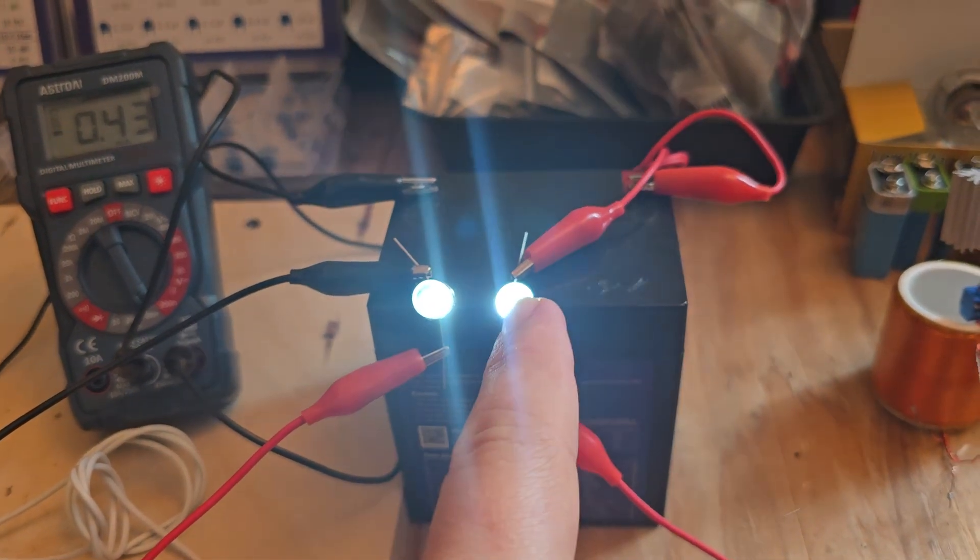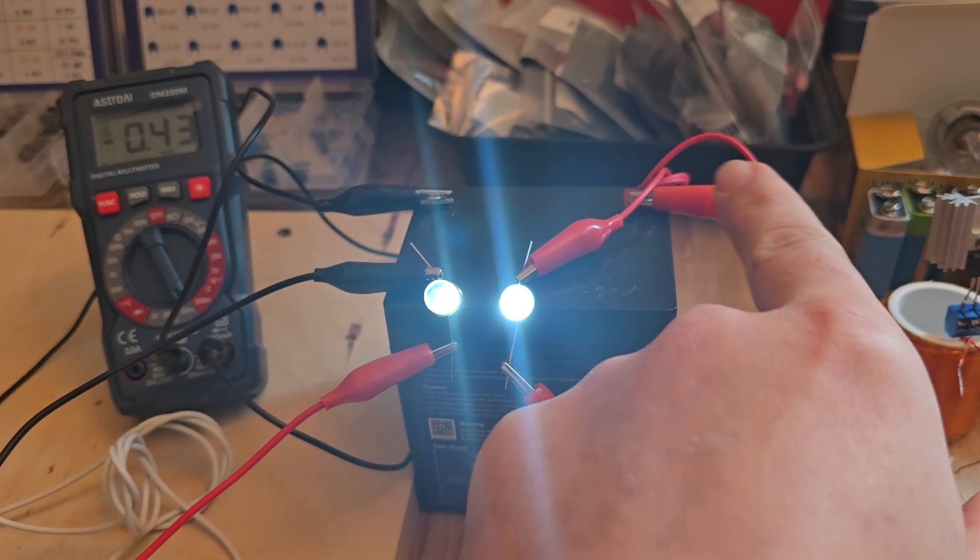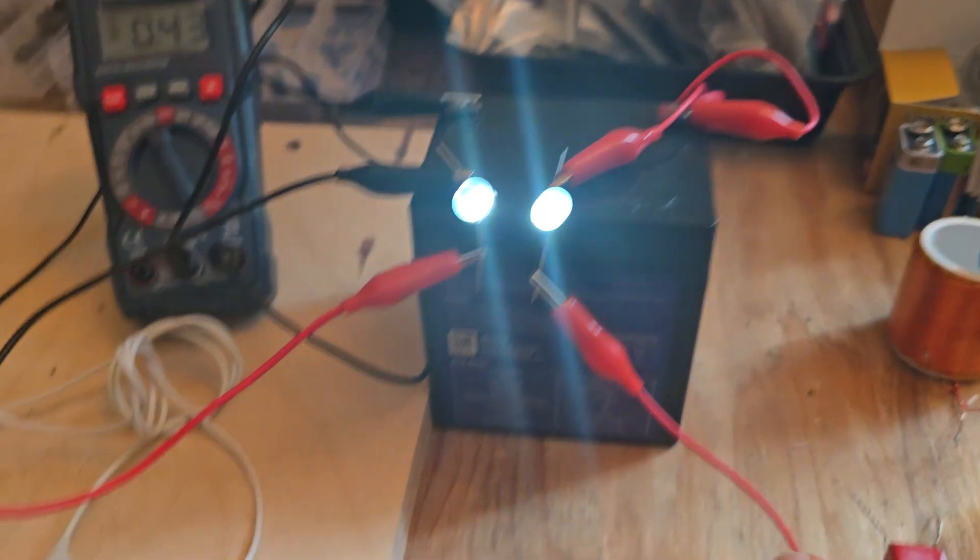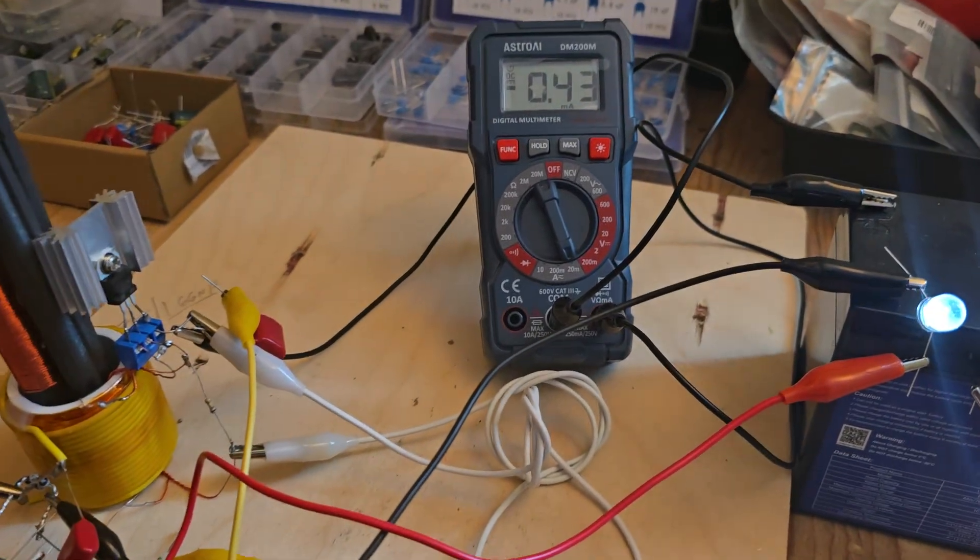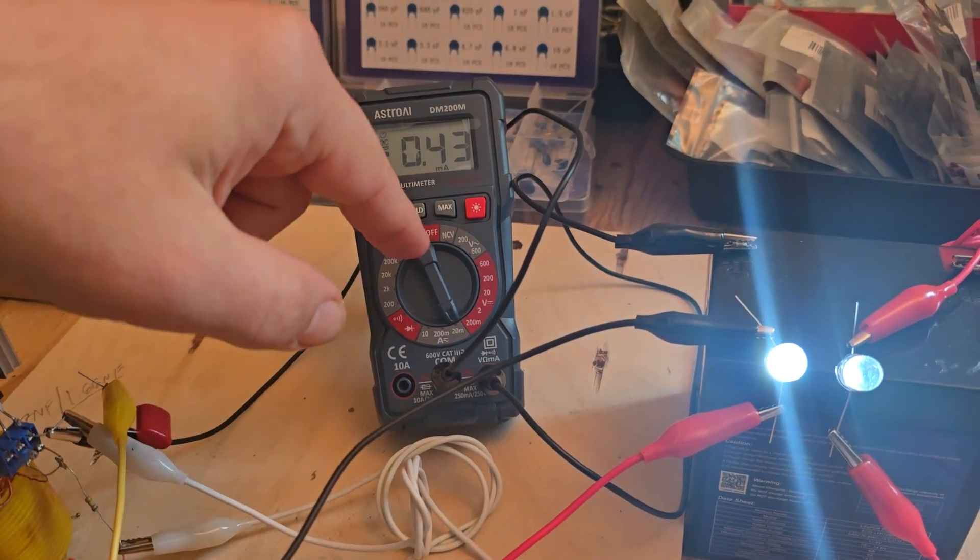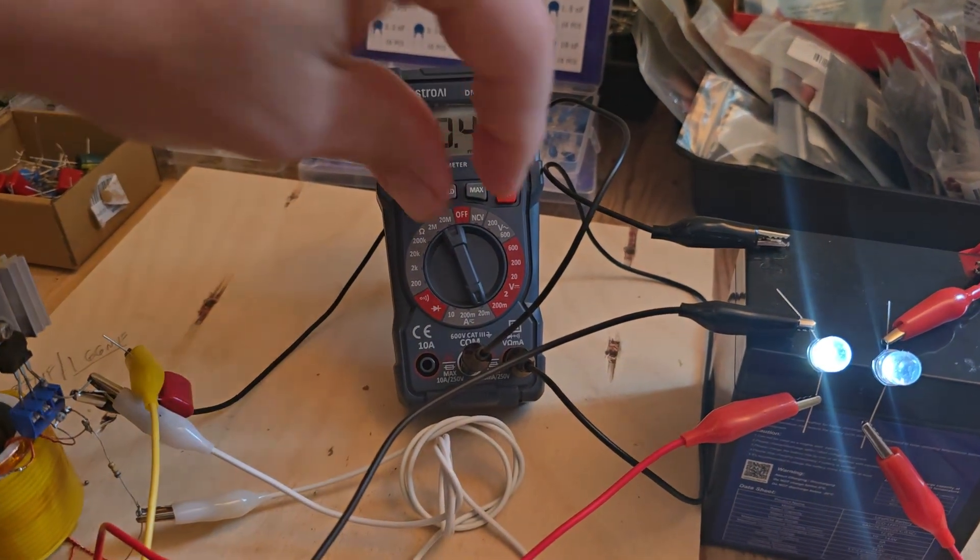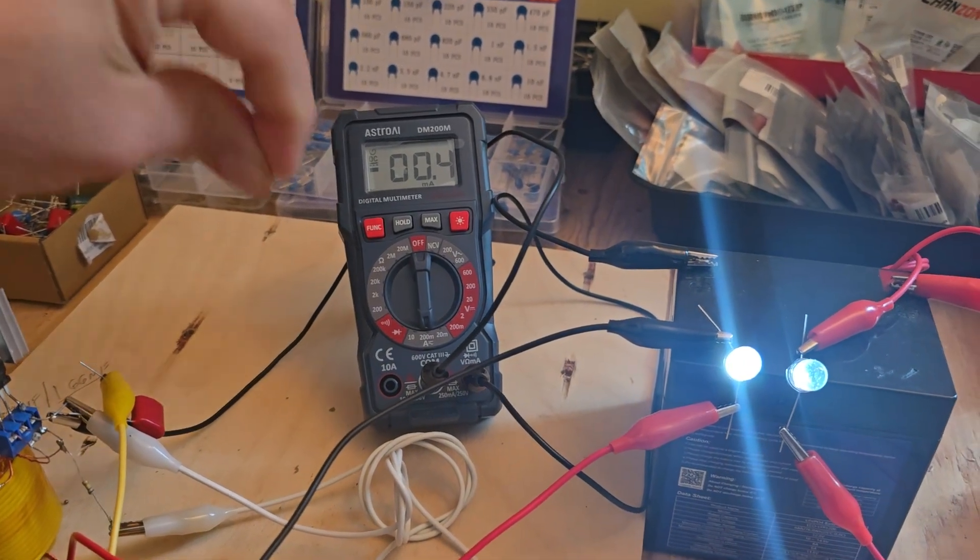This is the LED in series feeding the system. It goes 12 volt battery, LED, transmitter input. And then on the negative output of the transmitter, the negative rail is our series digital multimeter. And we're consuming half of 1 milliamp.